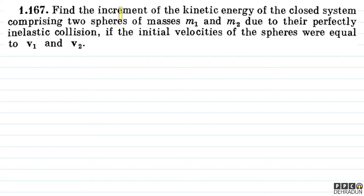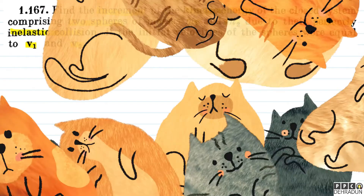The question says: find the increment of the kinetic energy of the closed system comprising two spheres of masses M1 and M2 due to their perfectly inelastic collision, if the initial velocities of the spheres were equal to V1 vector and V2 vector.